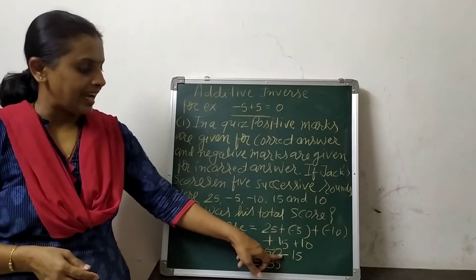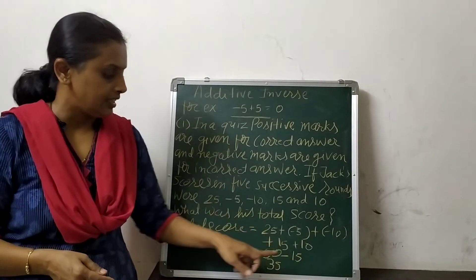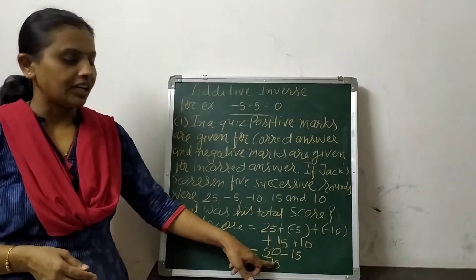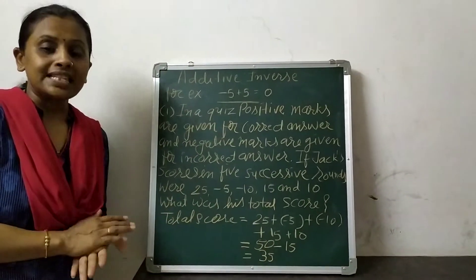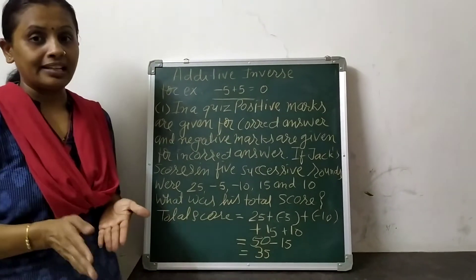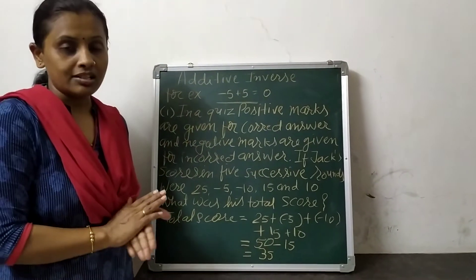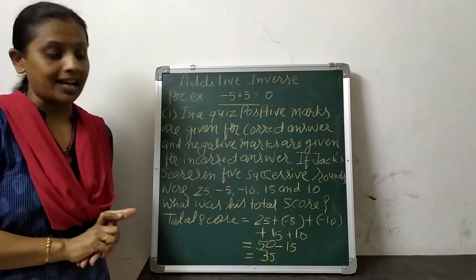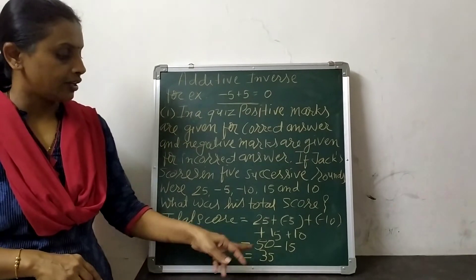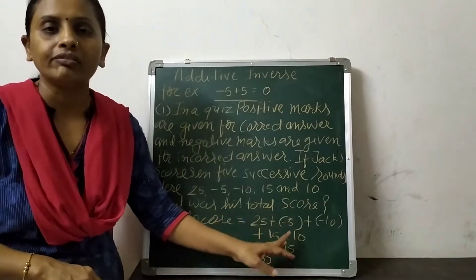50 minus 15 is equal to 35. So Jack's final total score is equal to 35.